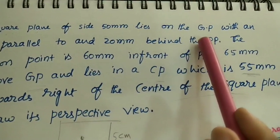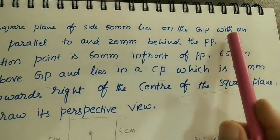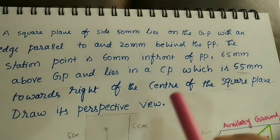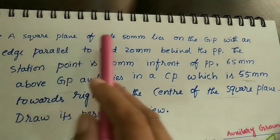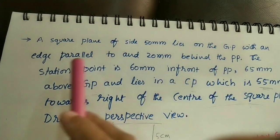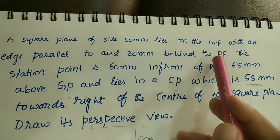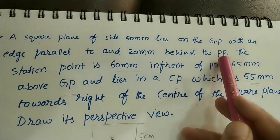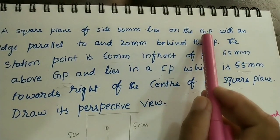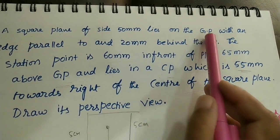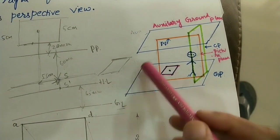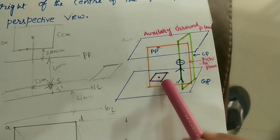The square plane lies on the GP — GP means ground plane. Always remember, ground plane means any horizontal plane. So this square plane is on the horizontal ground plane. With an edge parallel to and 20 mm behind the PP — PP means picture plane. So I will roughly show these two planes. These planes are imaginary planes. Ground plane I am taking as this horizontal plane. This is GP.